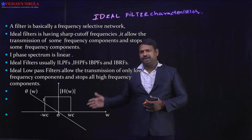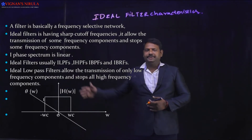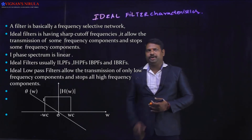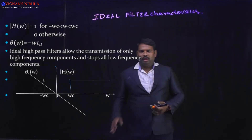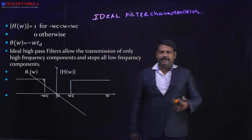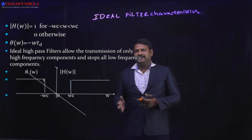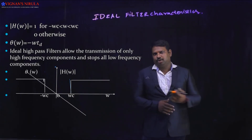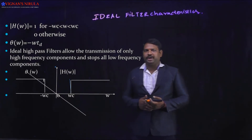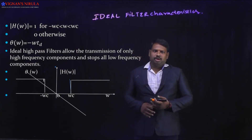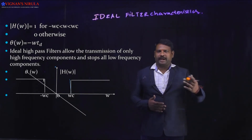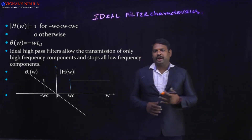The linear phase spectrum θ(ω) appears as a linear curve passing through the origin: for positive ω it will be negative, and for negative ω it will be positive. That is, θ(ω) = −ω·d. Therefore, |H(ω)| = 1 for −ω_c ≤ ω ≤ ω_c, and equals zero otherwise, and θ(ω) = −ω·d. These are the mathematical equations for the magnitude and phase of a low-pass filter.